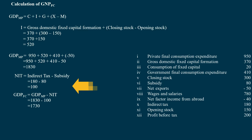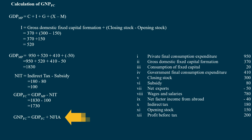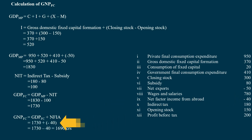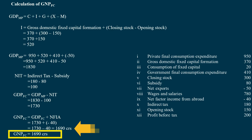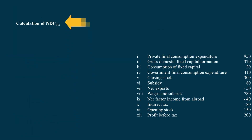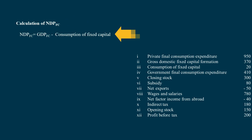Gross Domestic Product at Factor Cost = 1,830 minus 100 = 1,730 Crores. Gross National Product at Factor Cost = GDP at Factor Cost plus Net Factor Income from Abroad = 1,730 + (negative 40) = 1,690 Crores.